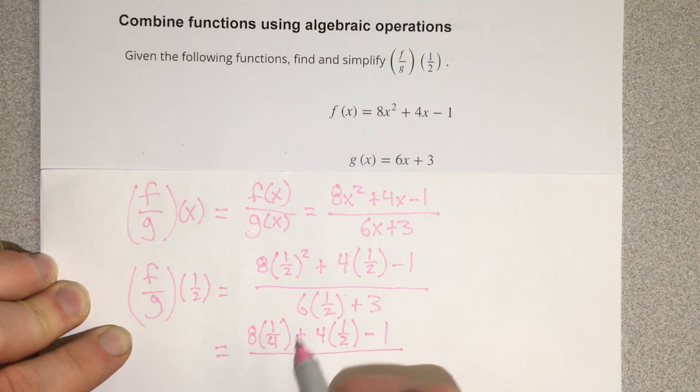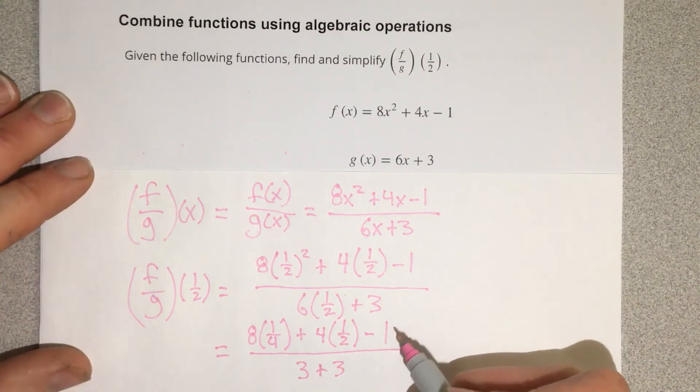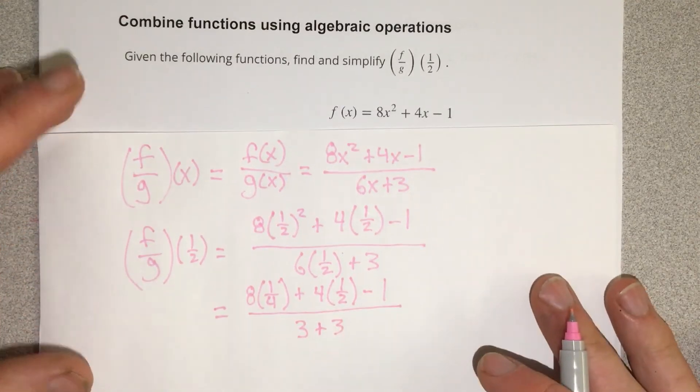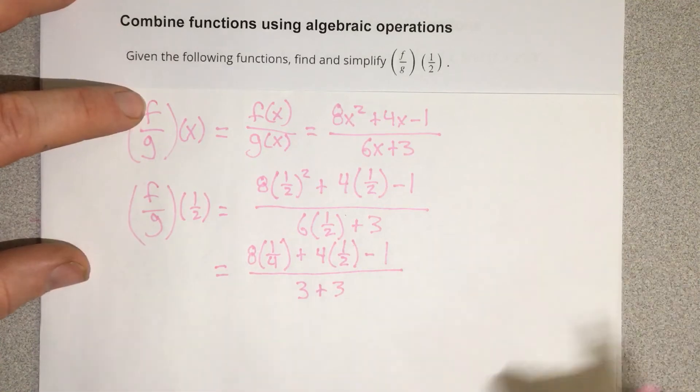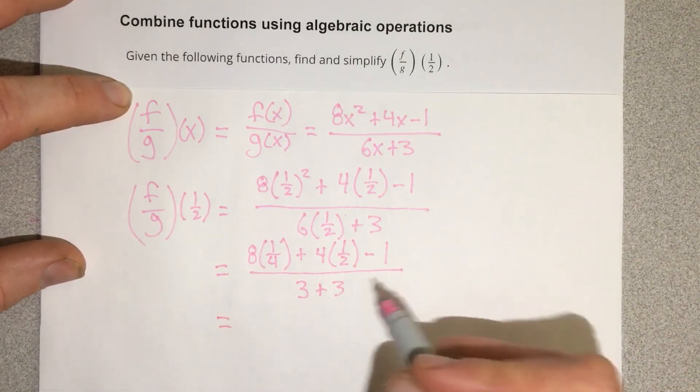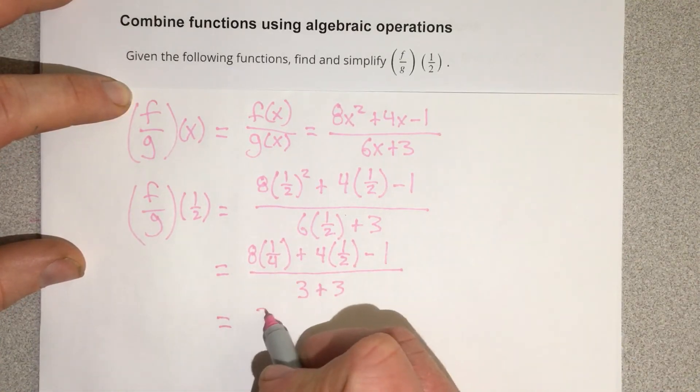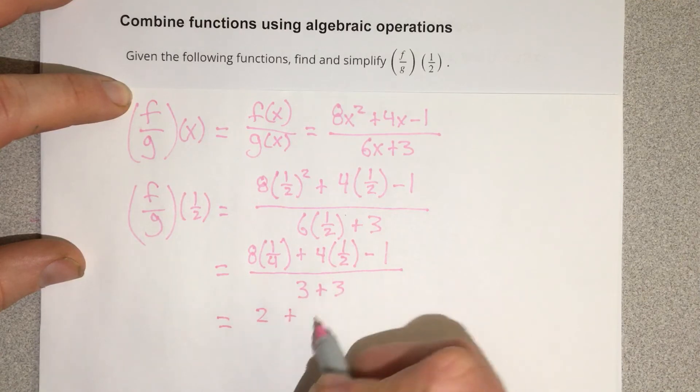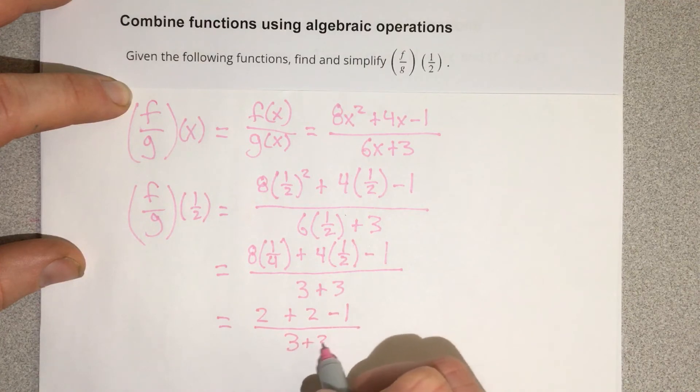We take 6 times a half, we get 3 plus 3 on the bottom. I'm going to slide this up a little bit, and we have 8 times a fourth, which is 2, plus 4 times a half, which is 2 minus 1 over 3 plus 3.